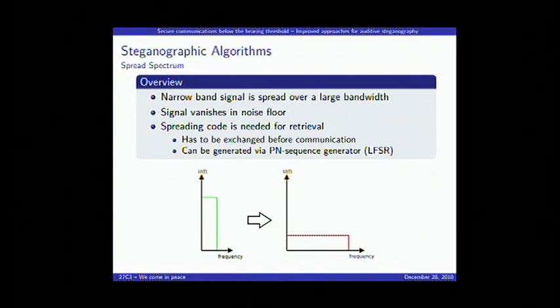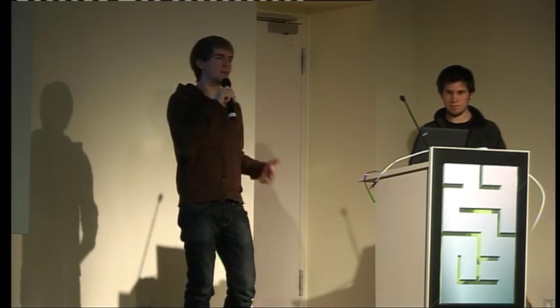Next is spread spectrum, used for example in UMTS with the CDMA mechanism. The idea is to spread a narrowband signal over a large bandwidth. In our case, bits are spread so that one bit gets transmitted as 400 chips, for example. You are slower but more robust. To do this you need a spreading code, which can be generated through a shift register. Sender and receiver need the same spreading codes.